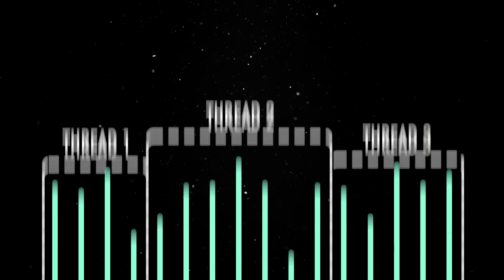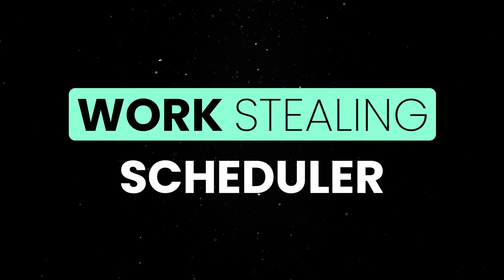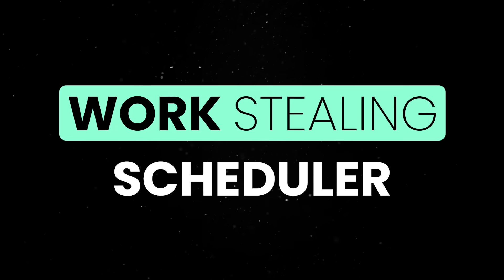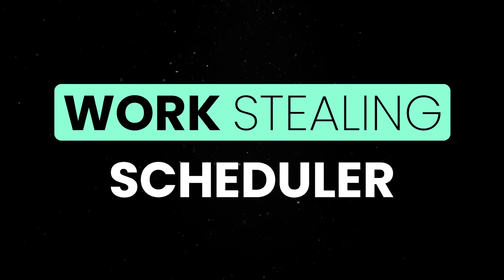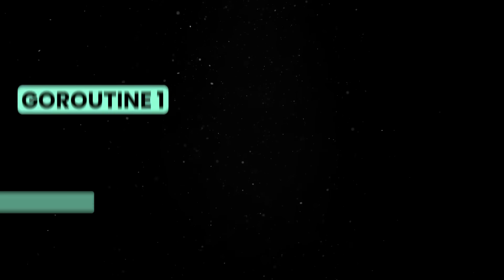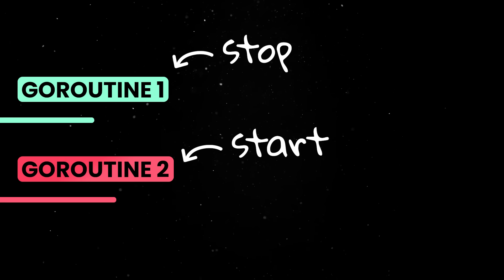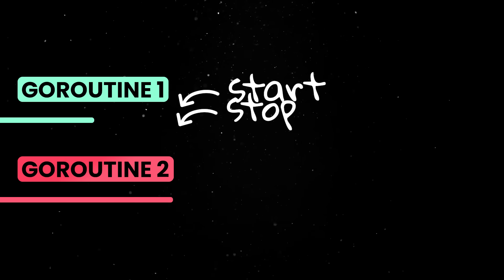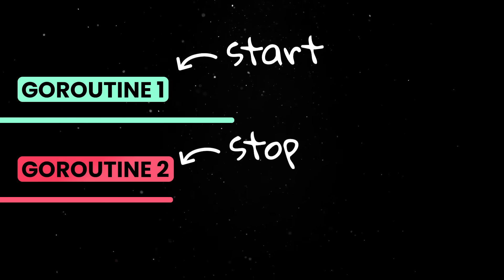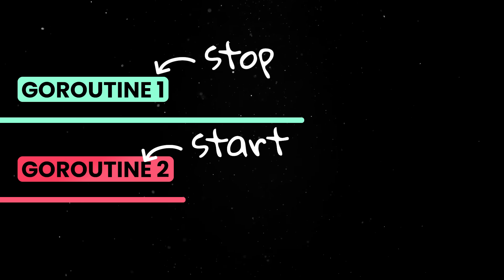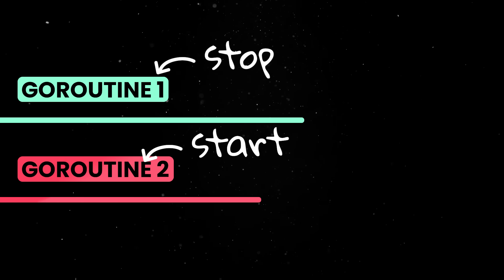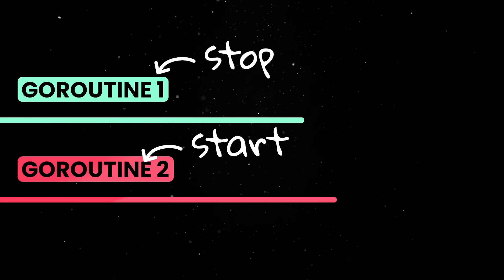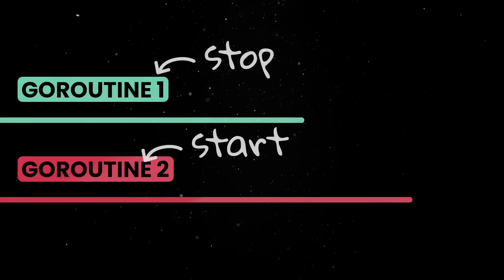Under the hood, Go uses a work-stealing scheduler with pre-emptive scheduling, which means that the runtime can step in and forcefully pause long-running tasks to make room for others, so no single Go routine can hog the CPU forever.